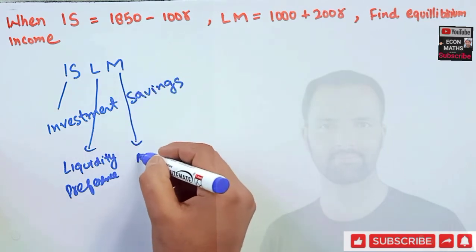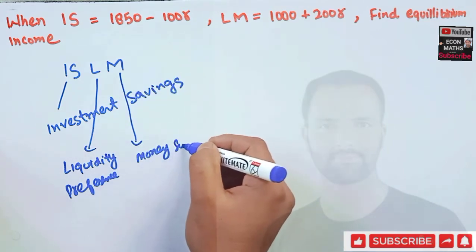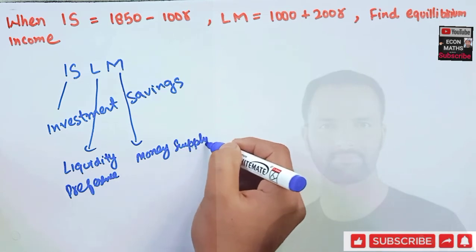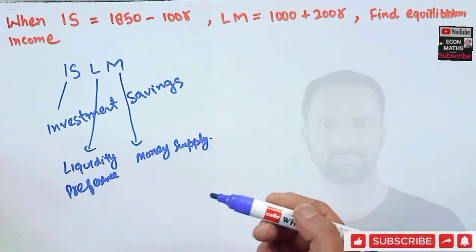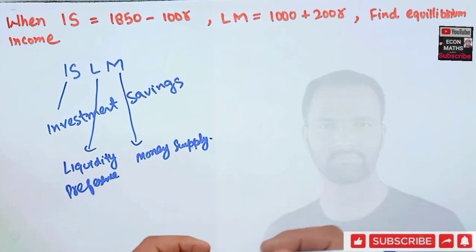And LM — L denotes the liquidity preference and M shows the money supply. Now what does this IS-LM model tell us?